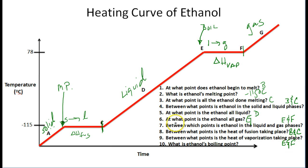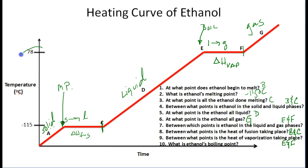Last but not least: what is ethanol's boiling point? The liquid ethanol begins to boil at point E. If we look at the graph, the boiling point is 78 degrees Celsius. I hope you guys are able to understand the idea and concept of heating curves and cooling curves, and I hope you found this helpful.